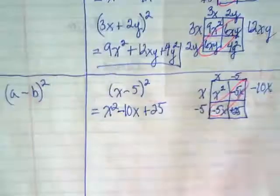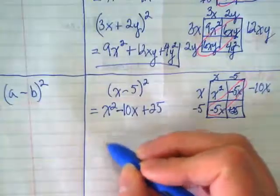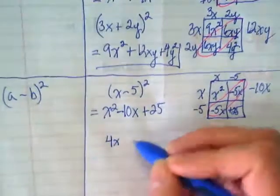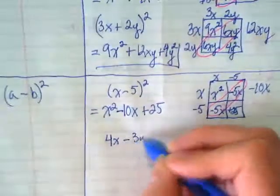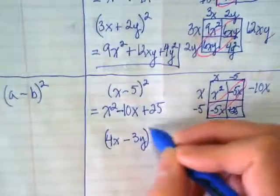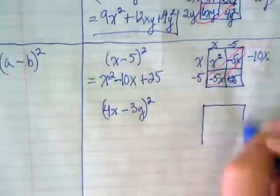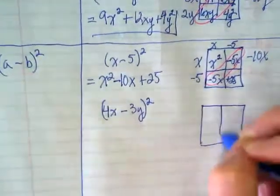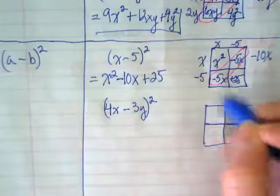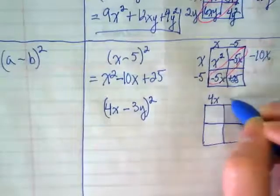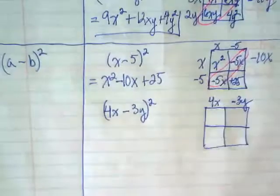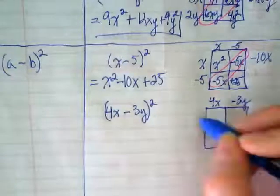One more example like this. (4x-3y)². 4x, -3y. Same down the side.